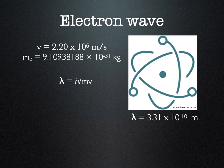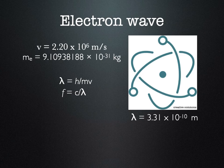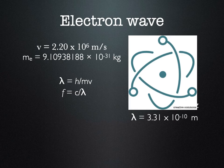We have a wavelength — what about a frequency? We use the standard equation: frequency equals the speed of light divided by wavelength (c over lambda). You should pause and calculate the frequency for this electron wave. With 10 to the 8th divided by 10 to the negative 10th, think about what exponent you expect. You should get 9.07 times 10 to the 17th hertz.